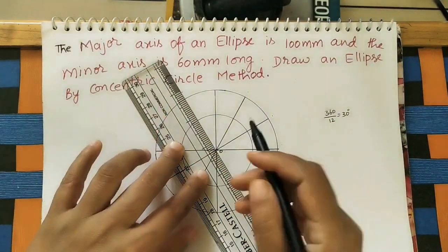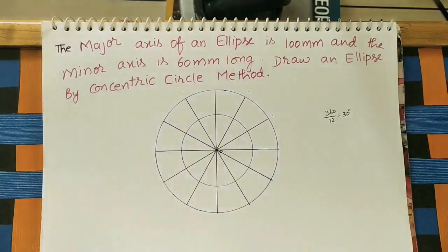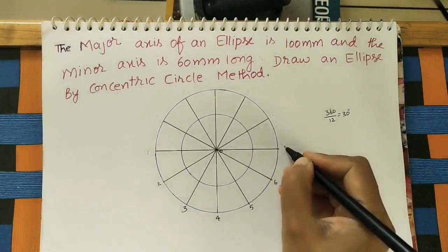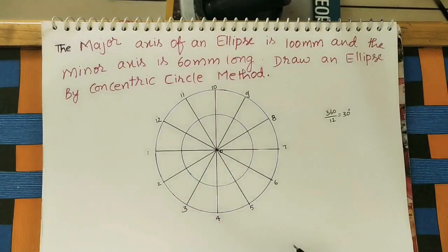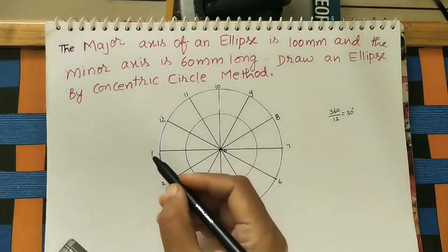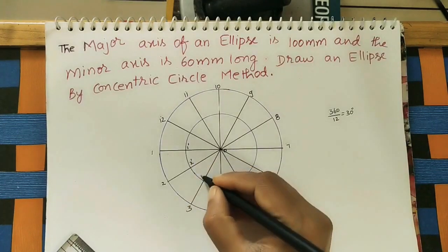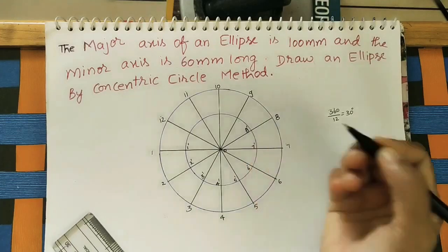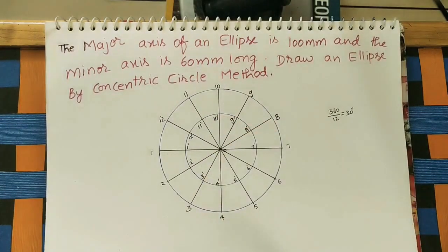Extend these lines — this point to center, this point to center, and this point to center. After getting the divisions, give numbering: starting from one side — one, two, three, four, five, six, seven, eight, nine, ten, eleven, twelve. We have made 12 divisions. At the inner circle intersection points also give numbering with dashes: one-dash, two-dash, three-dash, four-dash, five-dash, six-dash, seven-dash, eight-dash, nine-dash, ten-dash, eleven-dash, twelve-dash.